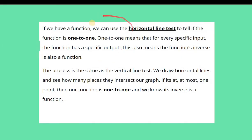Now, if we have a function, we can use the horizontal line test to tell if the function is one-to-one. One-to-one means that for every specific input, the function has a specific output.